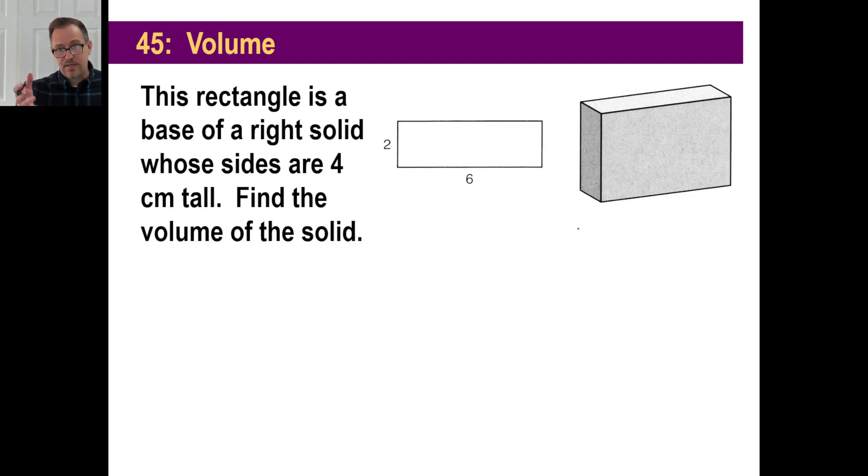All right. This rectangle is the base. In other words, this part right here is the top or even the base of a right solid whose sides are four centimeters tall. So this thing is four tall. There we go. And of course this thing is two right there and it's six this way. Find the volume of the solid.